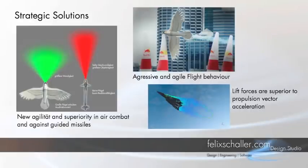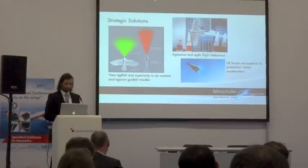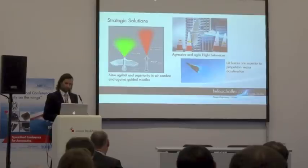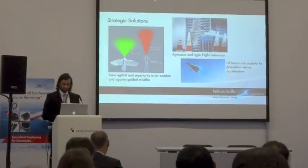Some other strategic solutions for combat — by higher agility, you could outfly guided missiles, because they have a very narrow action radius due to their inertia. They're very fast and by that cannot create sharp curves. Like a rabbit escaping from a fox by making sharp turns, you could escape from a tracking object.